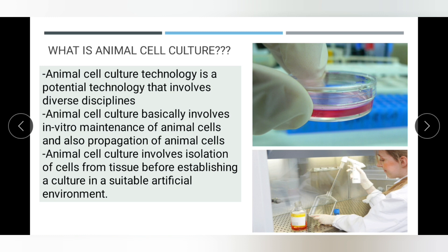If you provide everything properly, your cells will grow in very good condition. Everything has to be maintained under proper conditions. Even a small mistake — whether in the addition of a nutrient, a hormone, or a growth factor — can make a huge change in animal cell culture. Comparing with plant cells, even if you do little variations in media compositions, nothing much happens with plant cells, but a small mistake in animal cell media compositions makes a huge difference.